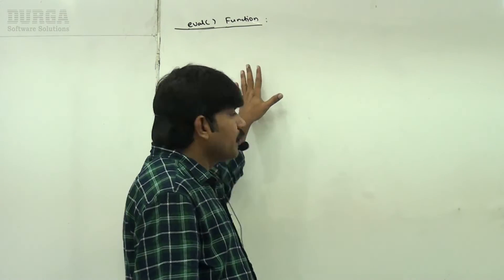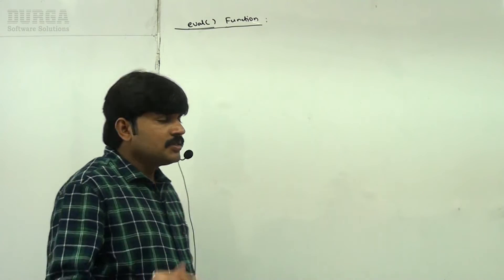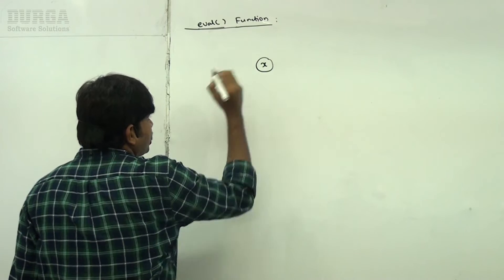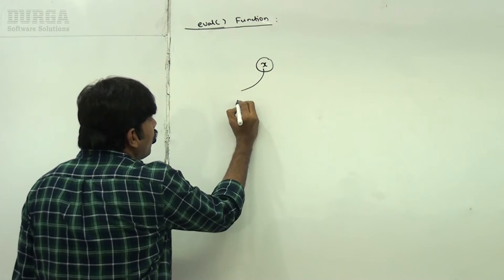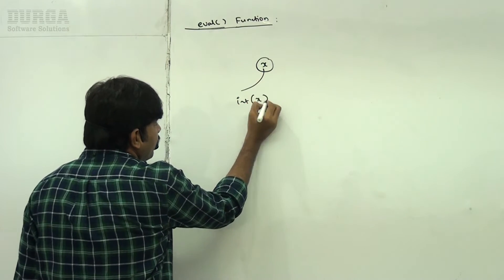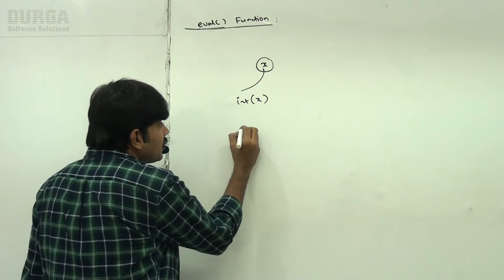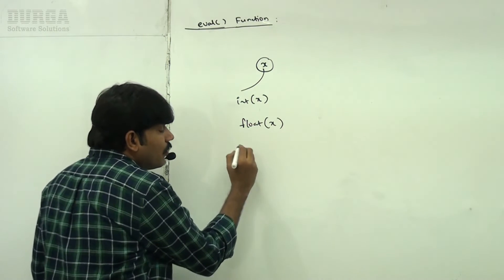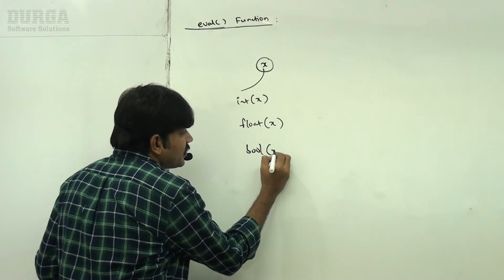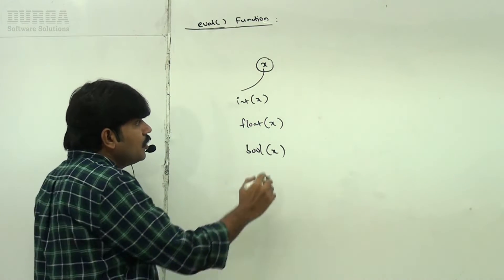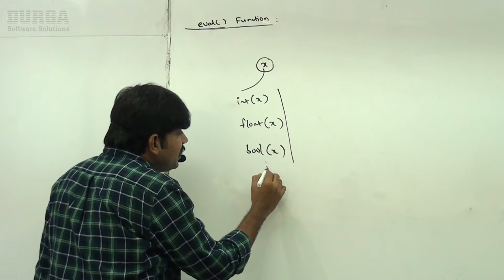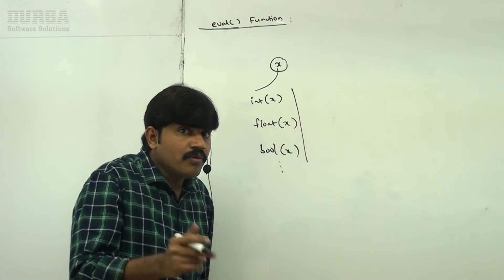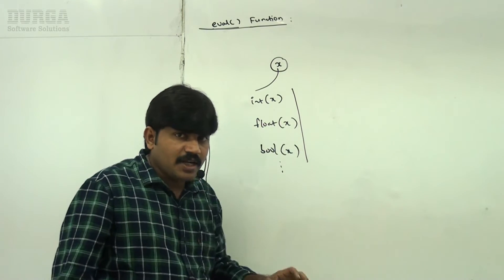Suppose I have some string and I want to convert it to int type, float type like float(x), or bool type like bool(x). We have many typecasting functions available. Now if we use eval(), these many typecasting functions are not required.